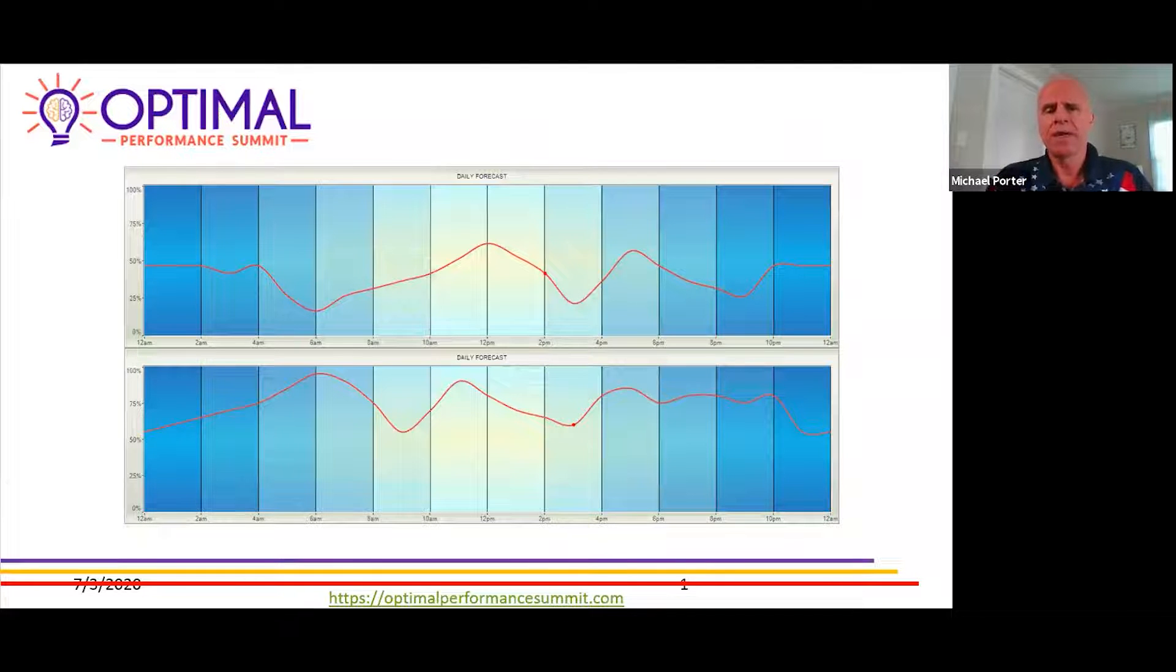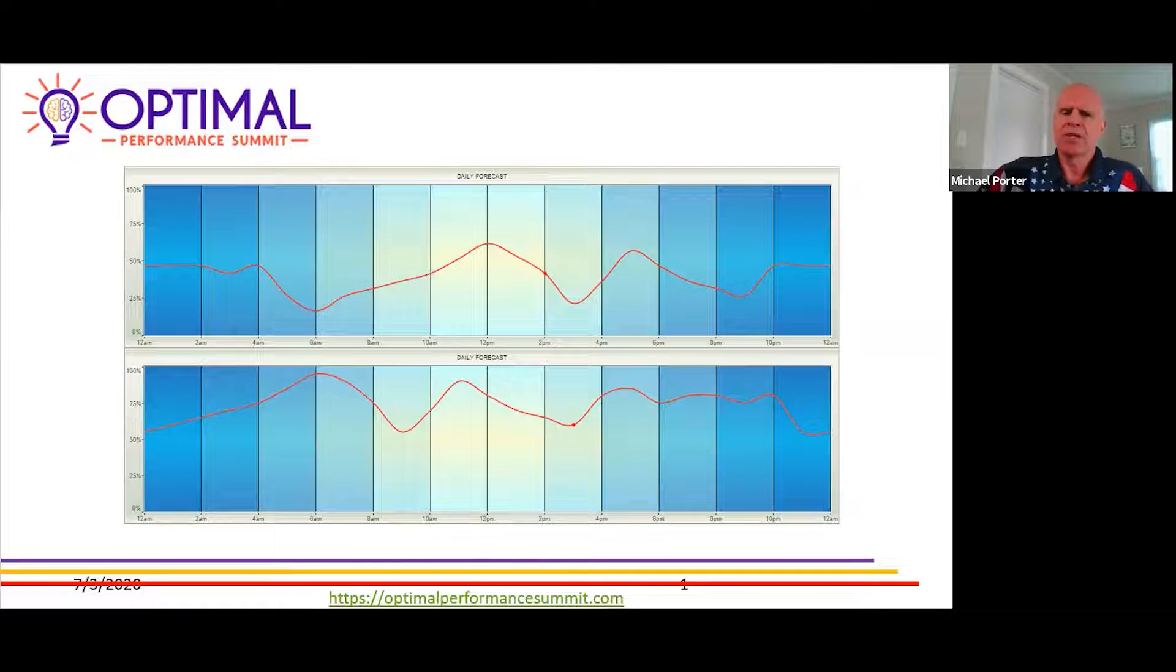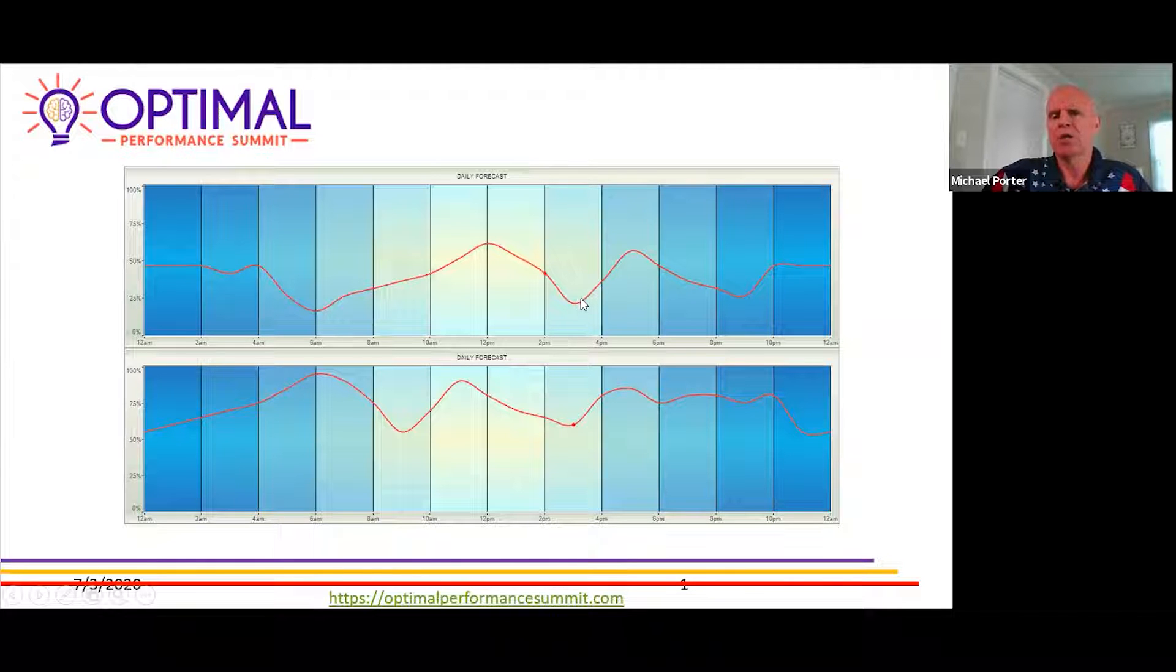One of the other things that the software shows you is a daily forecast of where that client's energy is at. We like this because we can show people when is a good time to use the BrainTap. These are two different examples. This person's energy goes down at six o'clock, starts going back up, but right here about three o'clock is a good time for them to use the BrainTap, and at nine o'clock.